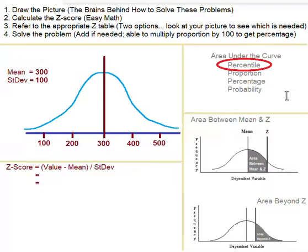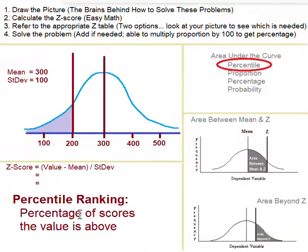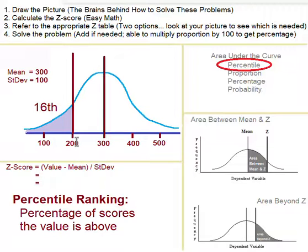Percentile ranking is the percentage of scores a value is above. If she took 200 photos on a particular day, the percentile rank would be 16th. That means 200 photos is more than 16% of other days when she takes photos — so 84% of the time she'd be taking more than 200 photos, and 16% of the time she'd be taking less. So 200 is above 16% of the scores — it's called the 16th percentile ranking.